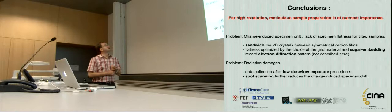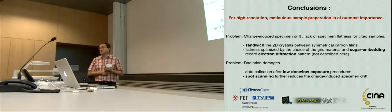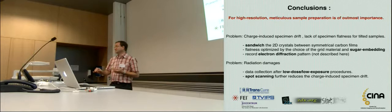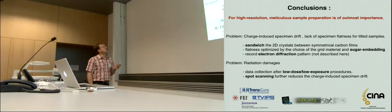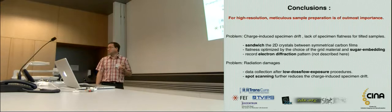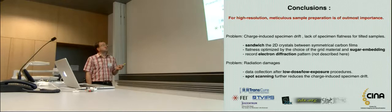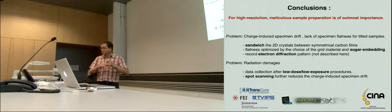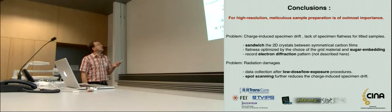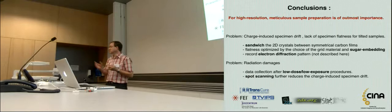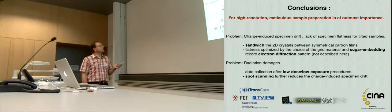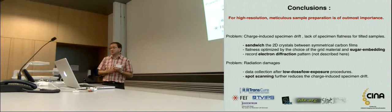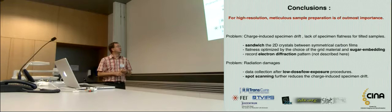I would say that for high resolution, you need to be meticulous. That the sample preparation is of extreme importance. Of course, 2D crystals are the first bottleneck. You first get 2D crystals. But then there is a lot to do. And the charge-induced specimen drift and lack of flatness can be solved, plus minus, by the sandwich method, by choosing good grid materials like this molybdenum, and the sugar embedding also helps to get the flat carbon. And you can in addition, you could also do electron diffraction, but this is not described here and will not be used in this workshop. And for the radiation damage, it is very clear to use low dose, low exposure. And furthermore, you can use spot scanning to reduce the charge-induced drift. Now I am finished with the talk. And I want to thank the sponsors and our institution for letting me do this. Thank you. If you have questions.